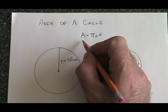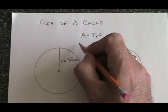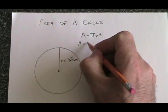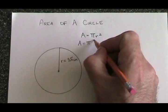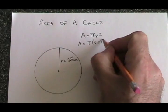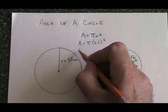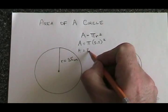Take the formula and replace the r with 3.5. We get A equals pi times 3.5 squared. For pi we will use 3.14.